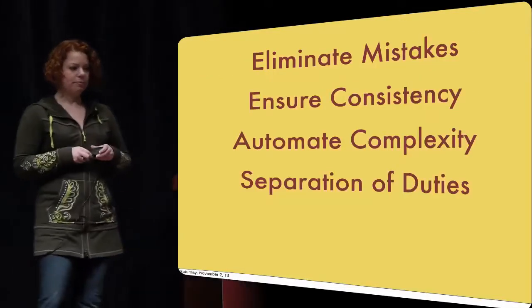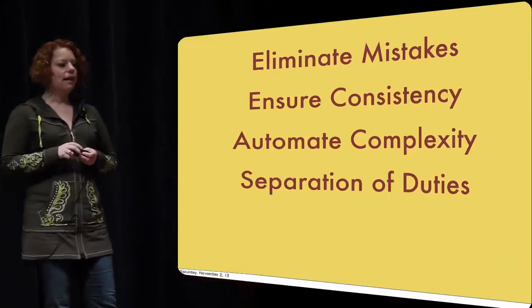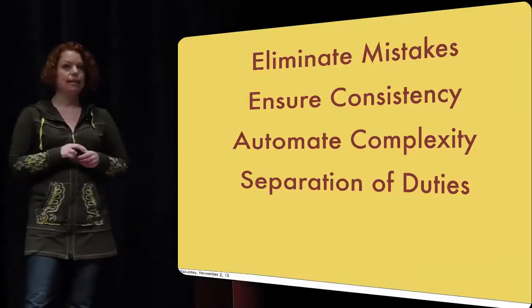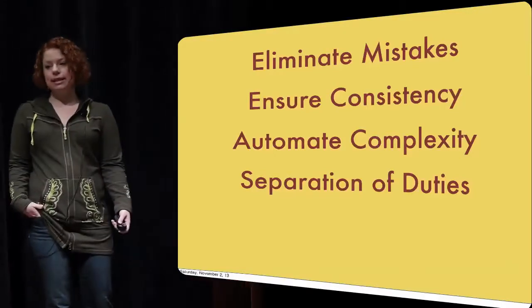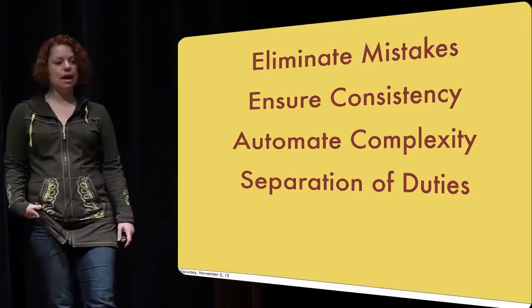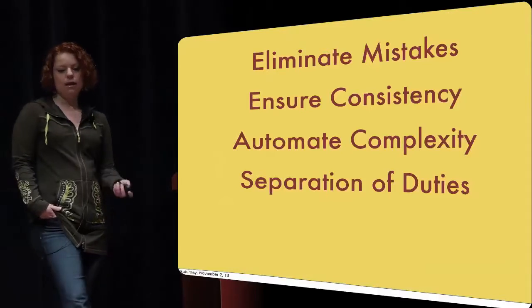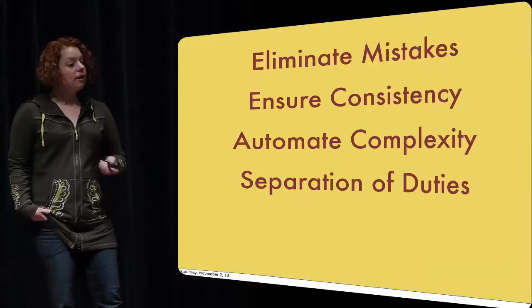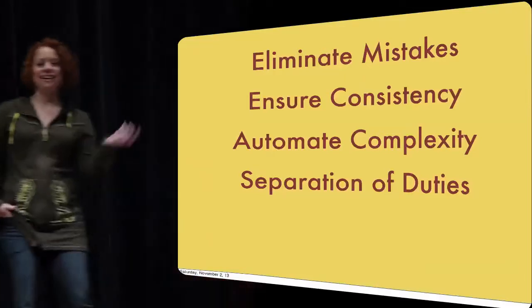Some of the things you can do with configuration management: you can eliminate mistakes. A lot of the things I was talking about were mistakes done by hand — people make typos, they make a mistake doing the build and all of a sudden you have the dev password in the production war file. We can ensure consistency across environments, across servers, across data centers. We can automate complexity — the complexity is never going to go away entirely, but we can get our fingers out of it. The fewer things we do by hand, the more likely it is that life is going to be good.